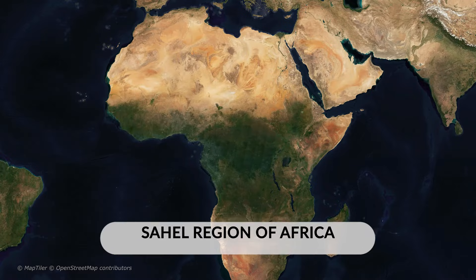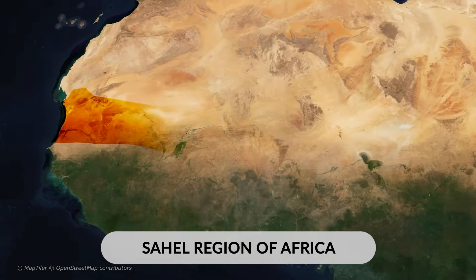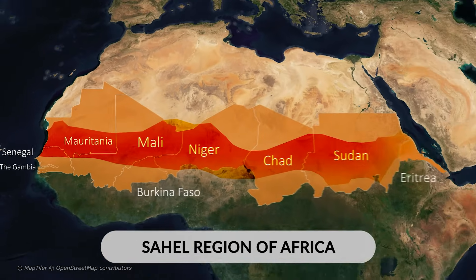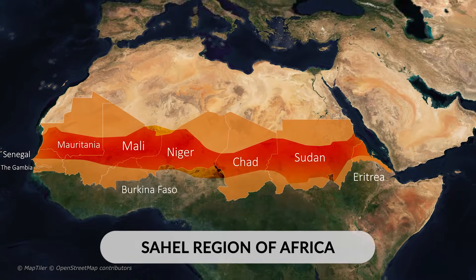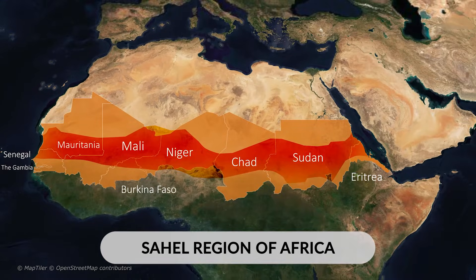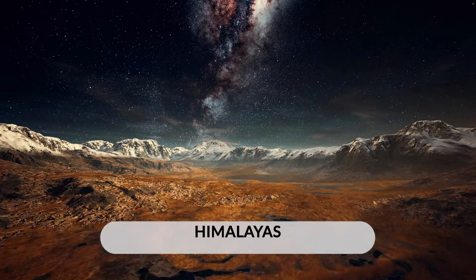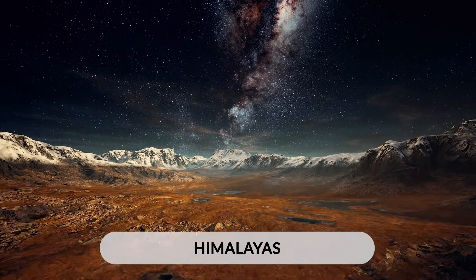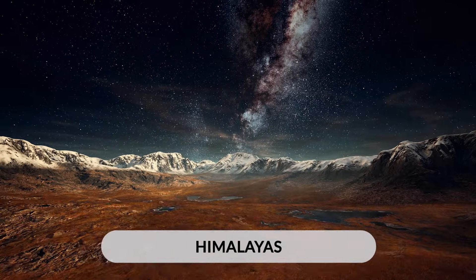Lastly, a physical formal region is defined by the natural environment, such as the Sahel region in Africa, where a similar climate can be found across multiple countries, or the Himalayas in Asia, which are defined by a series of connected mountains.